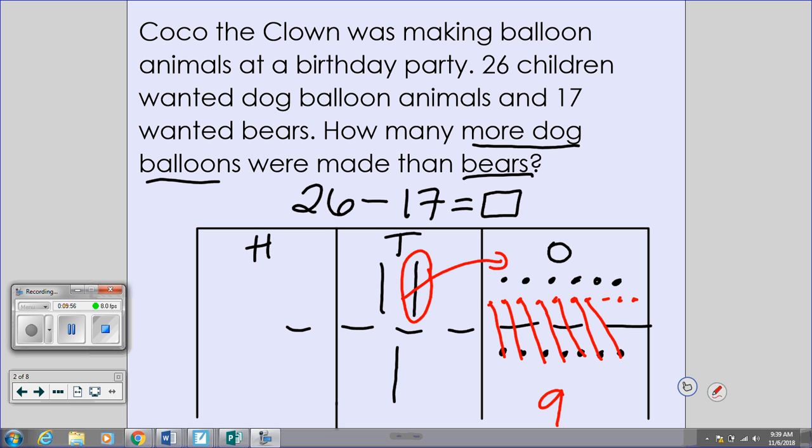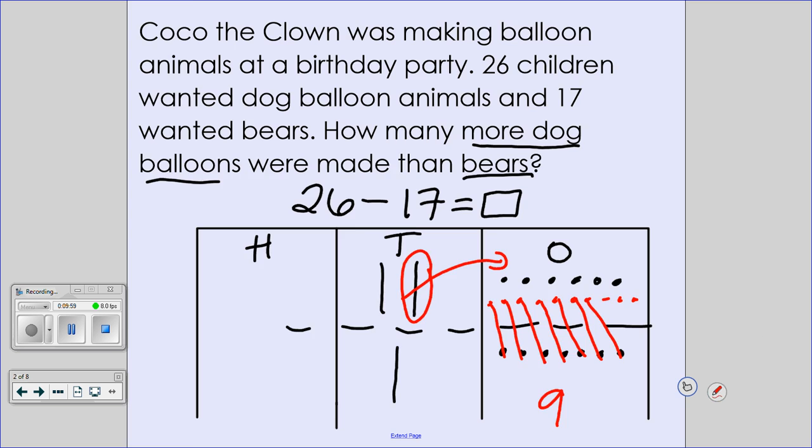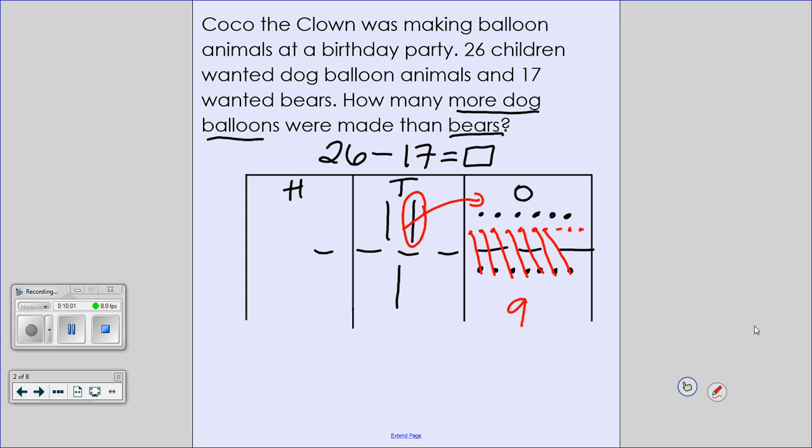I'm not done yet. I have my one ten. Subtract one ten leaves me with how many tens? We're subtracting. One take away one leaves you with zero. So I have zero, nine. How many more dog balloons did you make over bear balloons? Nine.